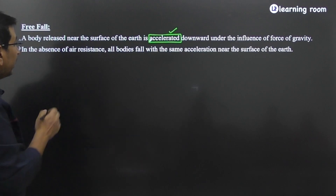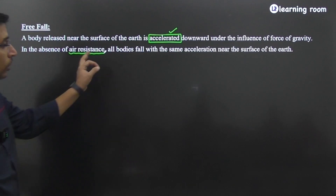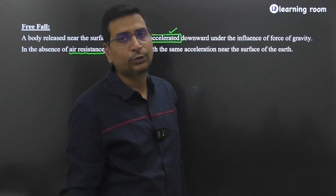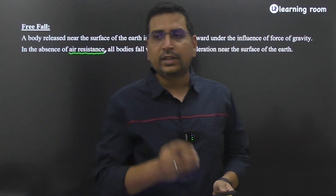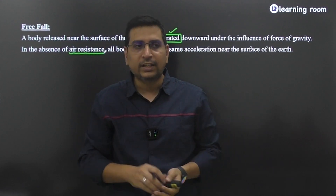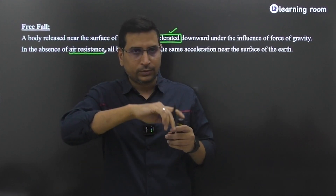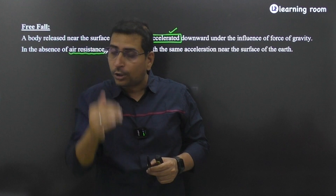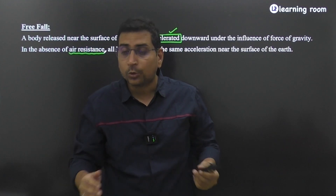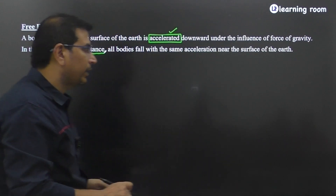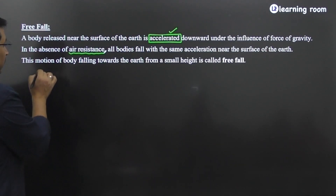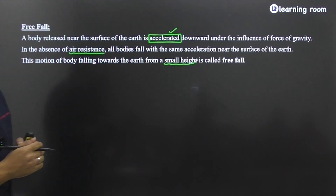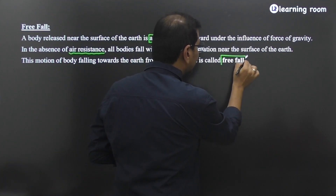In the absence of air resistance, all objects fall with the same acceleration near the surface of the Earth. If we ignore the air resistance, you can say that the acceleration of every object falling near the surface of Earth is the same for all objects. This motion of a body falling towards the Earth from a small height is what is called free fall.